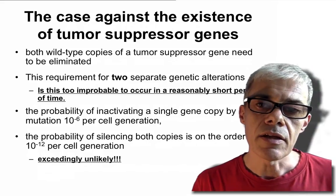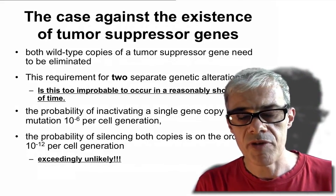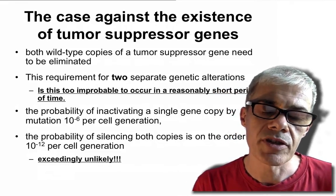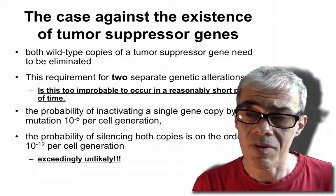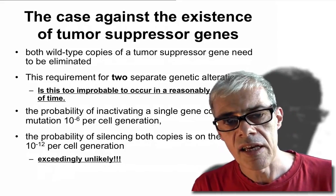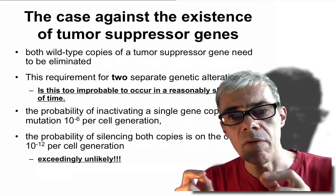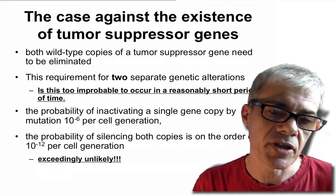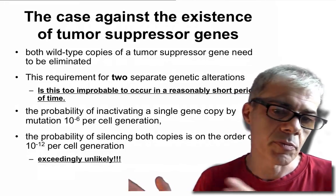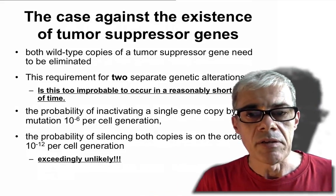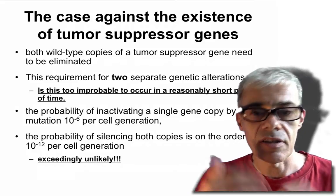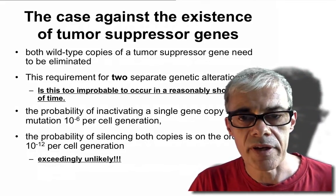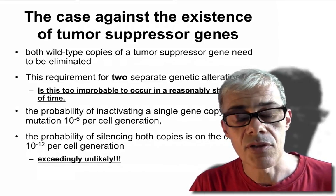Because you need to knock out both copies of the tumor suppressor to see the effect, it seems unlikely to happen. When people first started thinking about tumor suppressor genes in the 1970s, the thinking was that it's improbable to knock out two copies of the same gene in the same cell. The probability of knocking out a gene by mutation is around 10 to the minus 6 per gene, and with 6 billion base pairs and 30,000 genes it's highly unlikely — but it does happen, so what's going on?